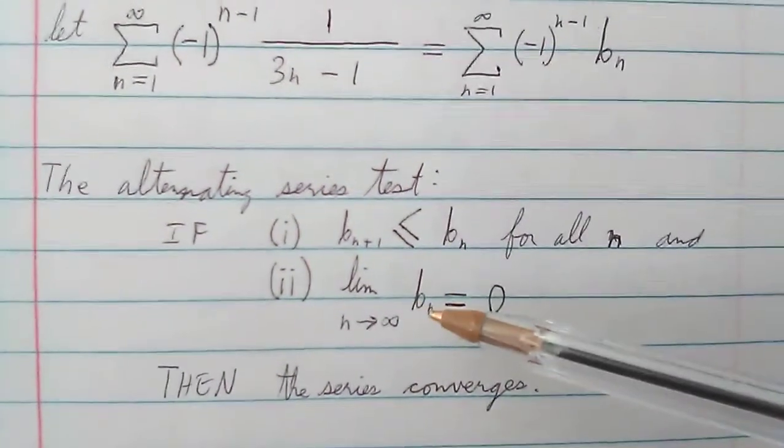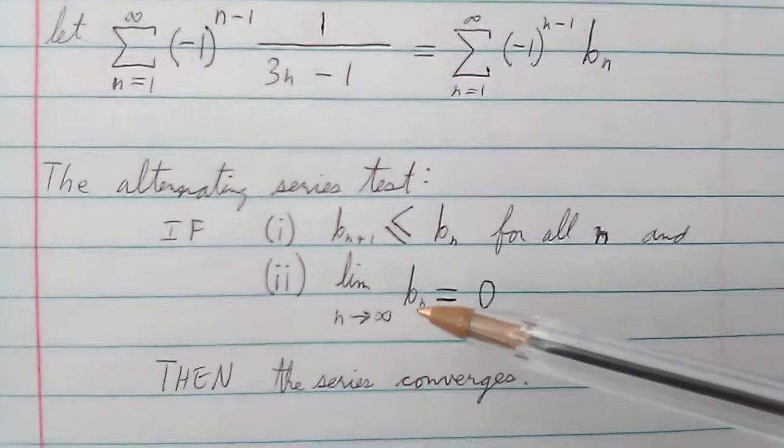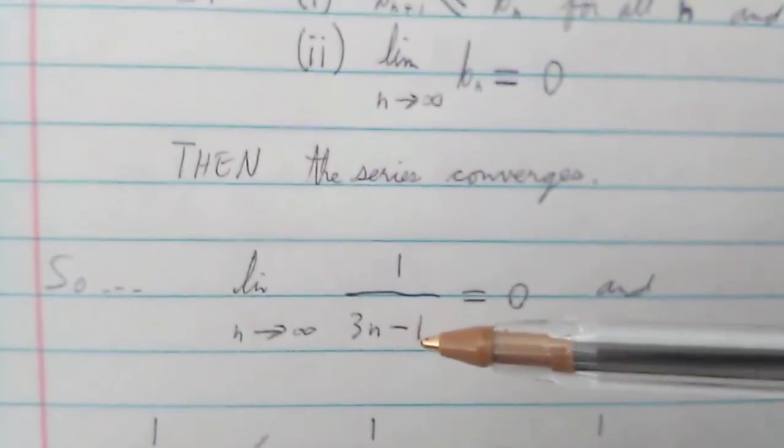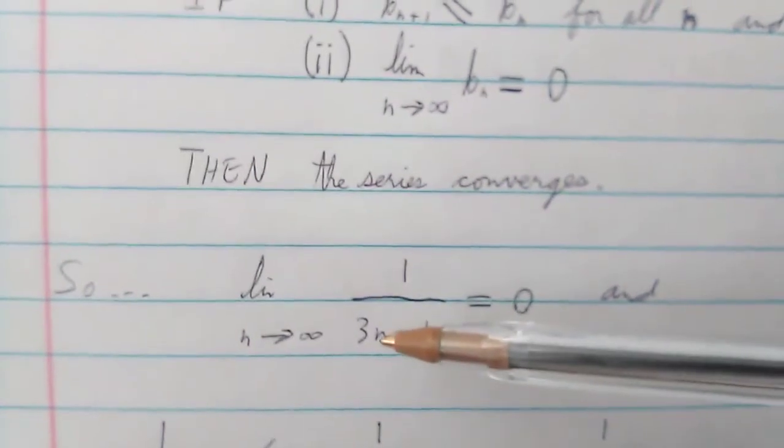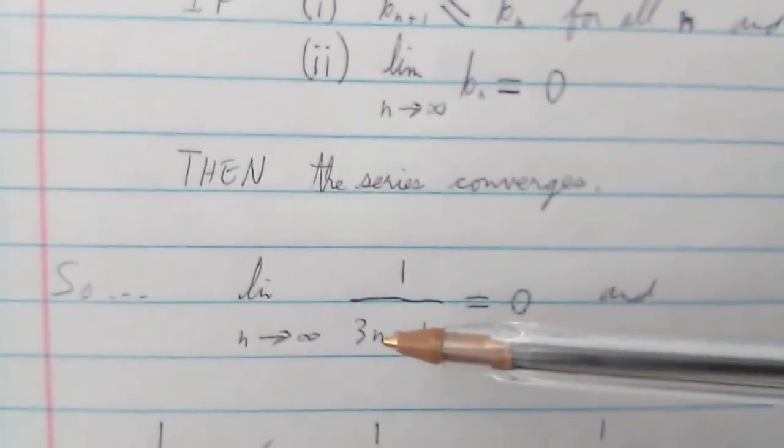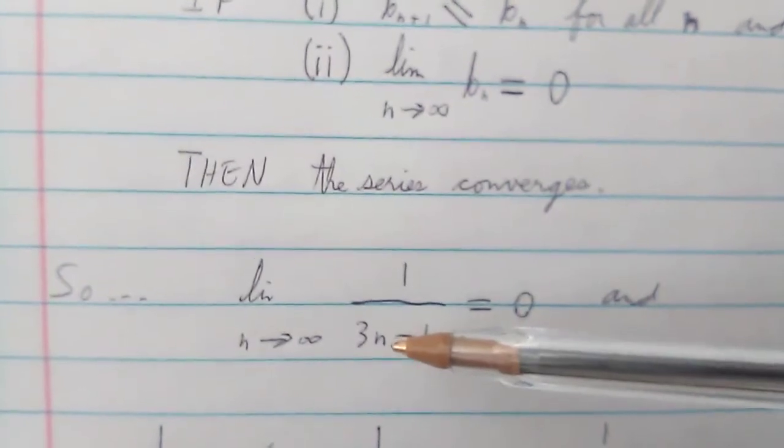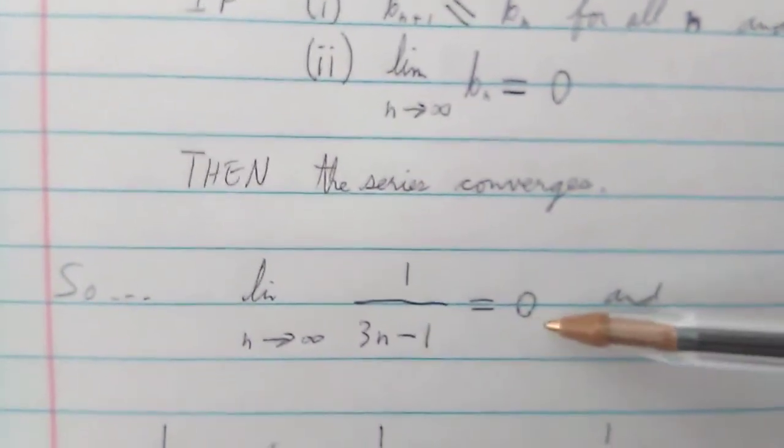If both these requirements are met, then the series will converge. So if we look at b_n in this example, it is 1 over 3n minus 1. So 3n in the denominator becomes the dominant term. As it goes to infinity, the limit will go to 0.